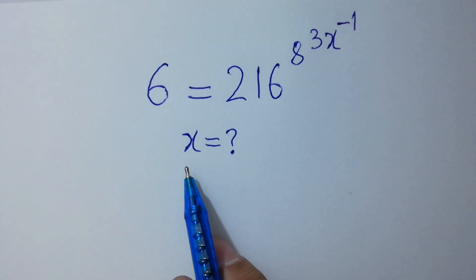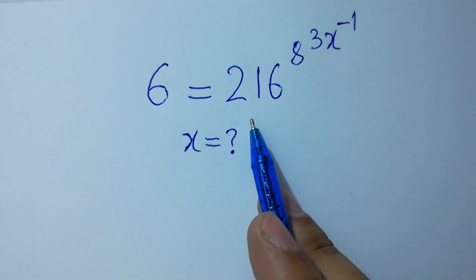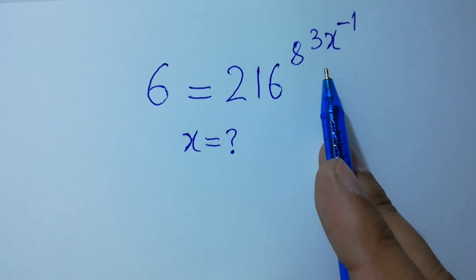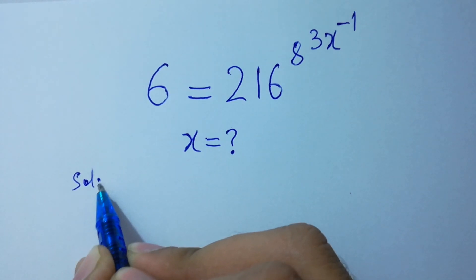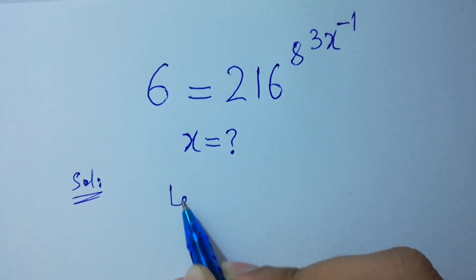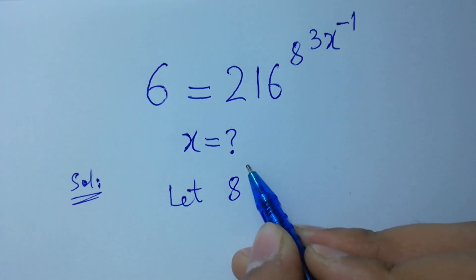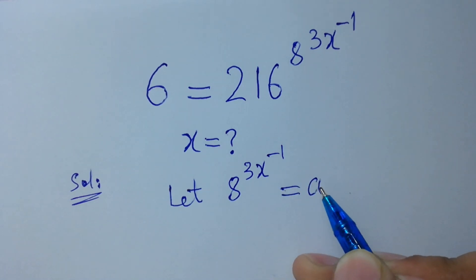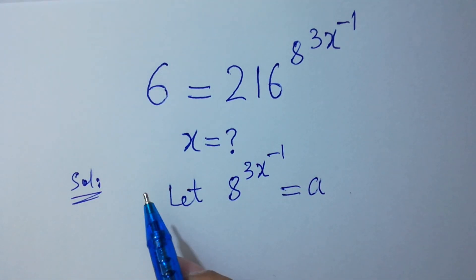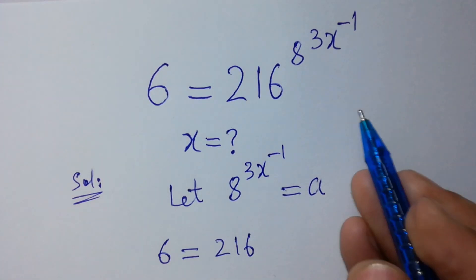Hello friends. Find the value of x if 6 equals 216 to the power 8 to the power 3x inverse. Let's solve it. Let 8 to the power 3x inverse equal to a. Then we have 6 equal to 216 to the power a.